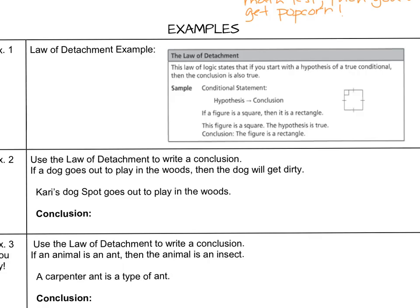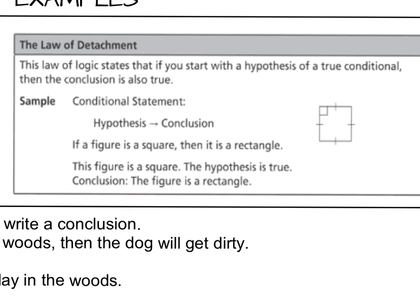Here's another example for the law of detachment. This law states that if you start with a hypothesis of a true conditional, then the conclusion is also true. Here is the original conditional: if a figure is a square, then it is a rectangle. This figure is a square — the hypothesis is true; it has right angles and all four sides are equal. The conclusion is then that it is a rectangle. We're coming to this conclusion based on a fact from the given hypothesis.